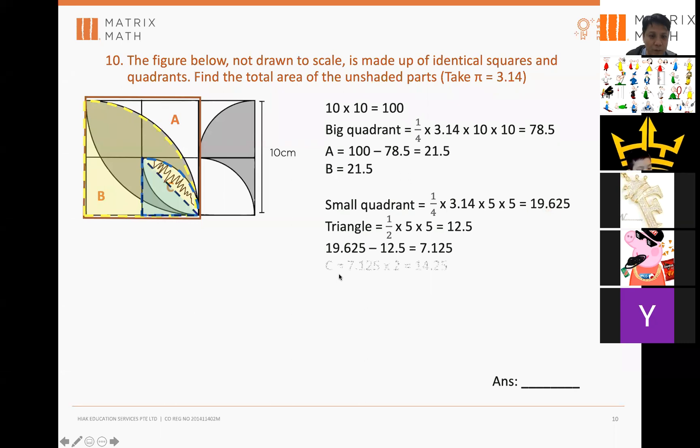So, if I use 7.125, multiply by 2, I get the entire pattern, which is C. Correct? Easy, huh? Until here.